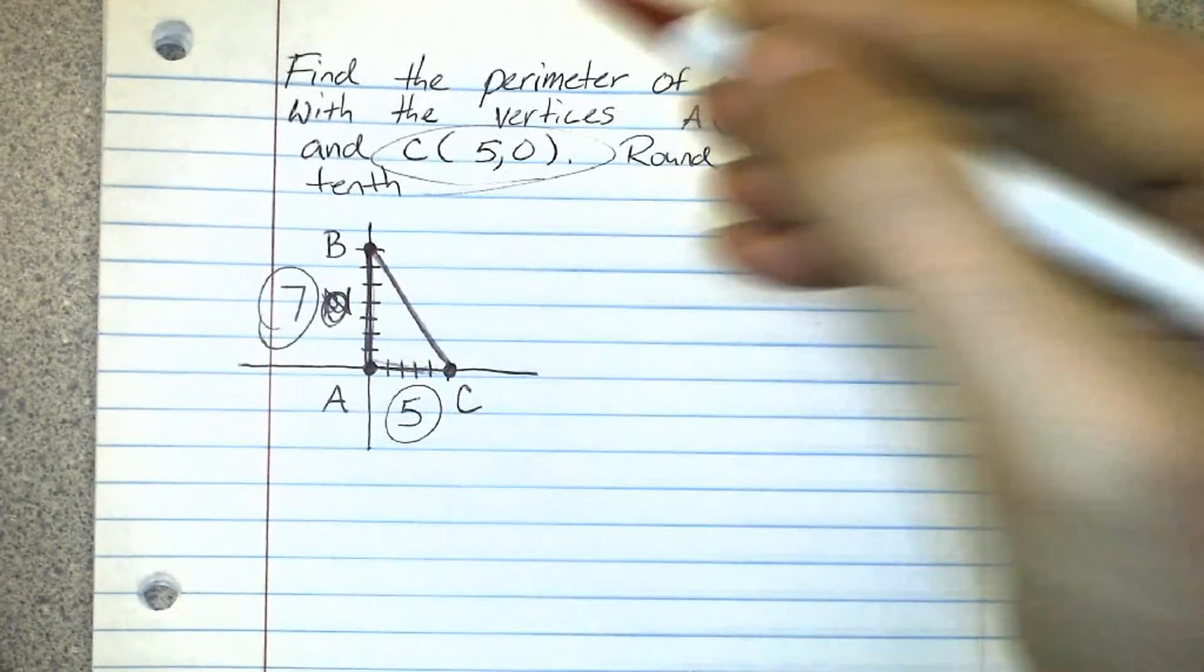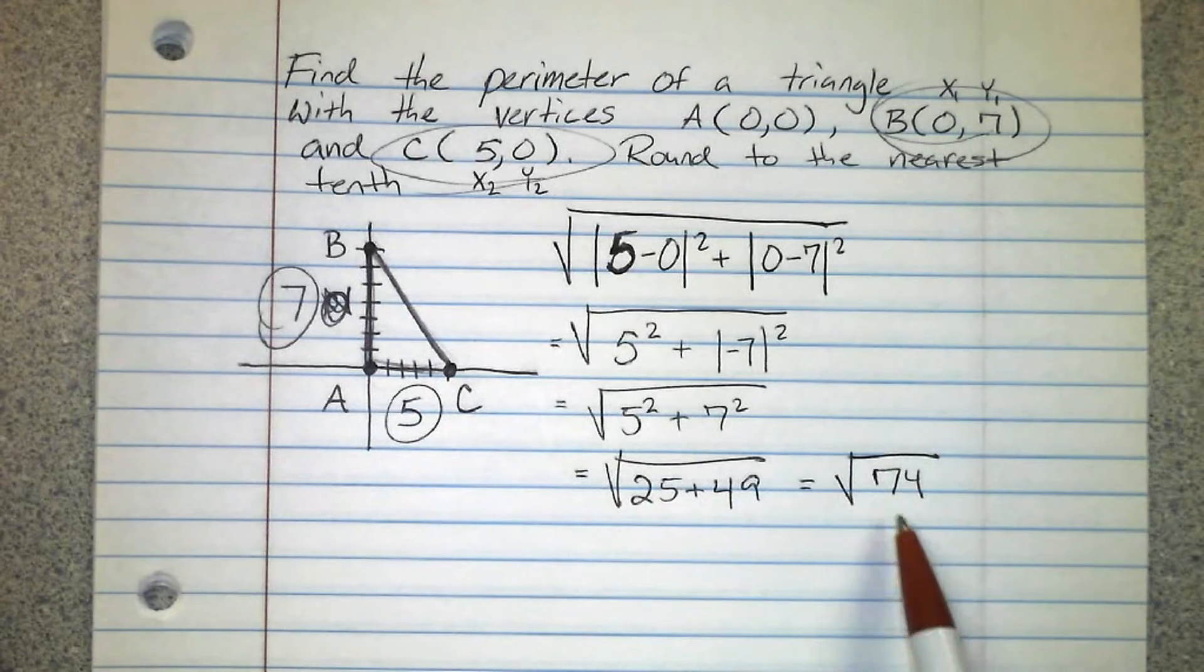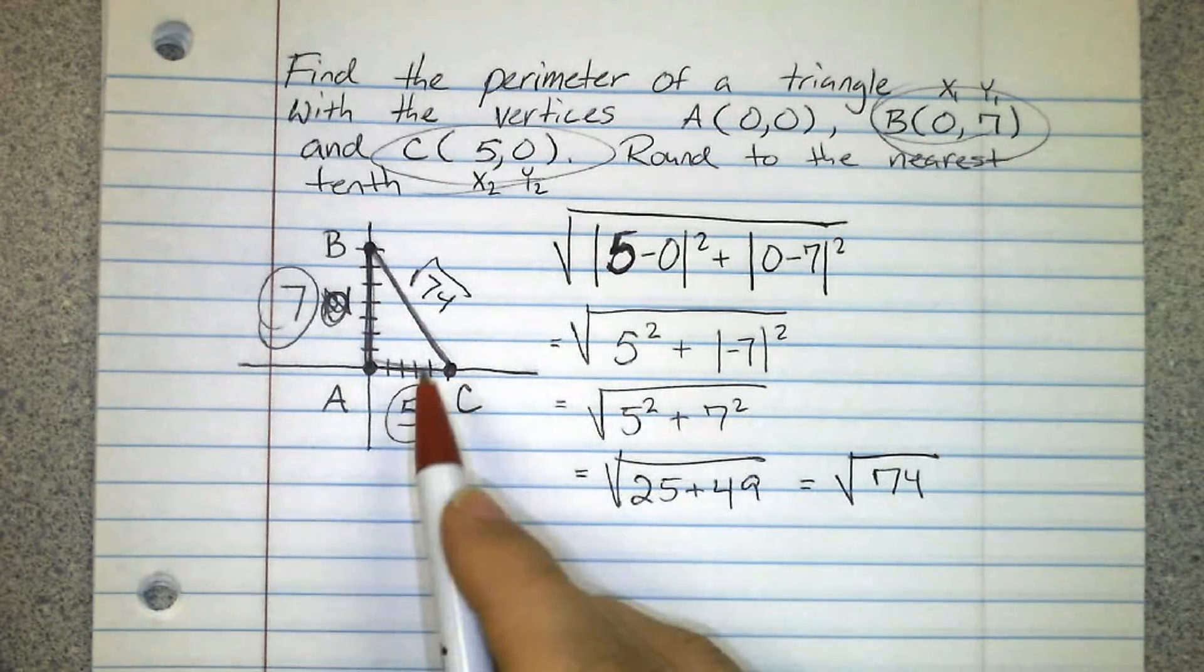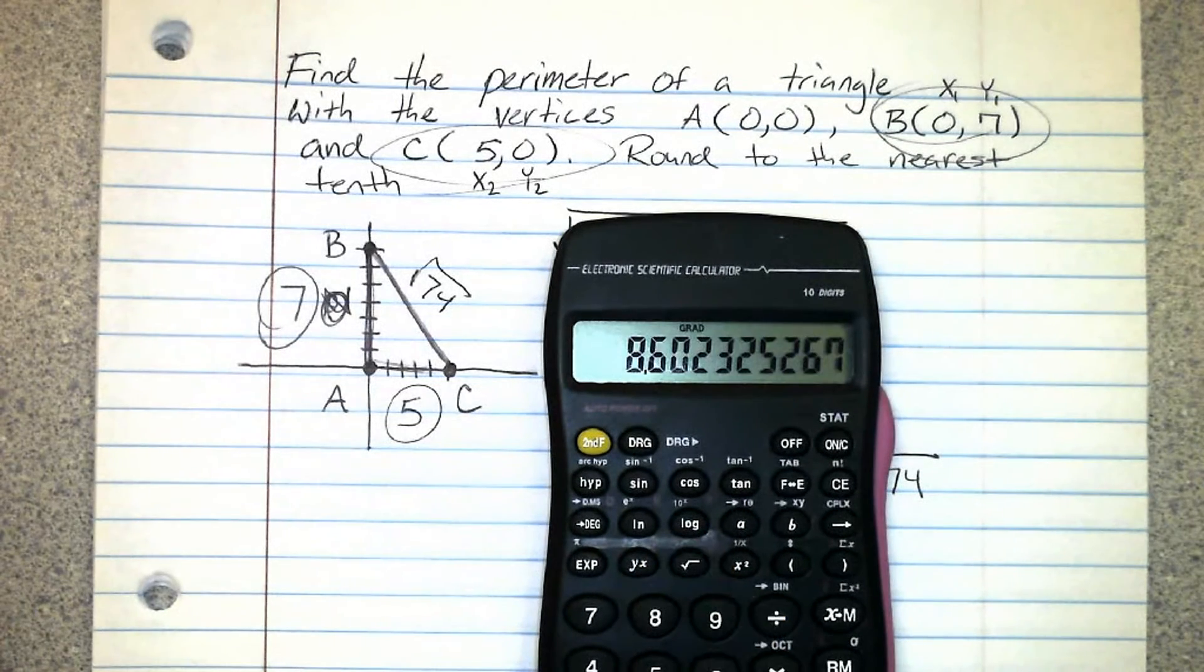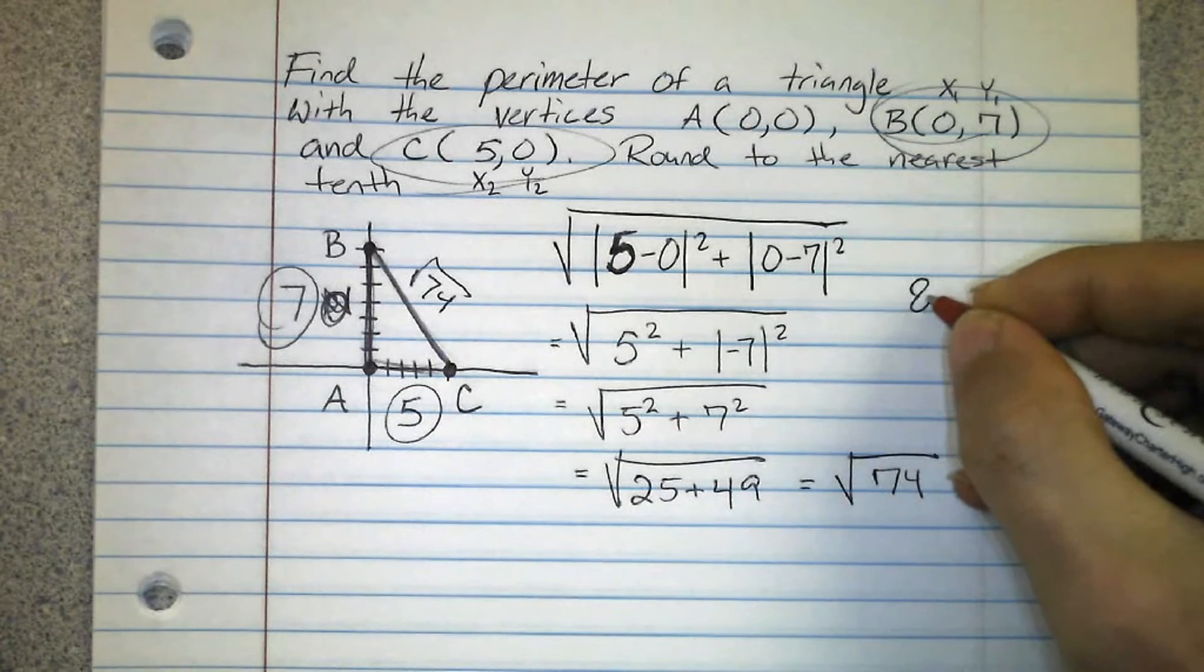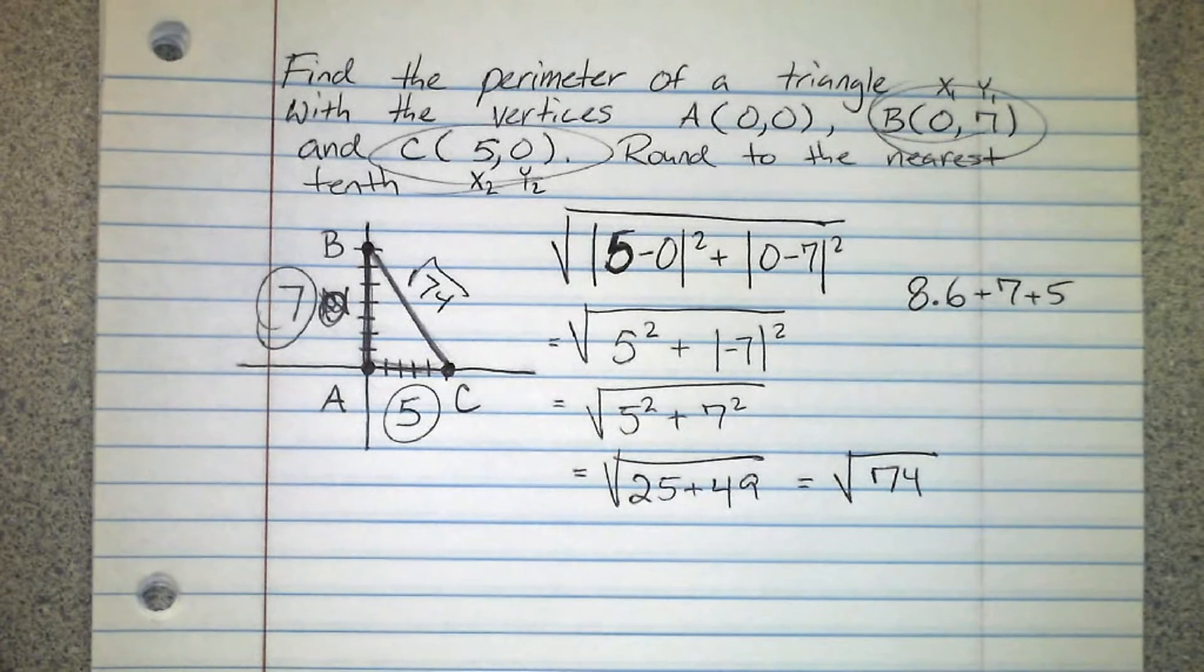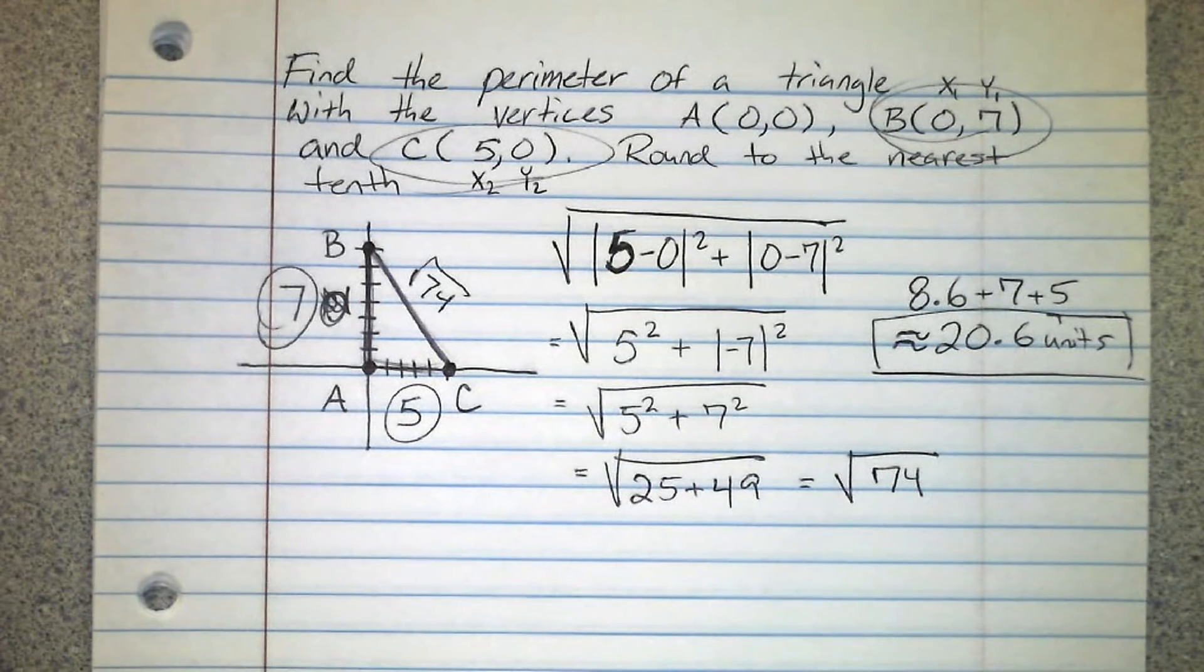Distance formula shows us that this is square root 74, and we're not done yet. We need to find the perimeter, so I know it's going to be root 74 plus 7 plus 5. Well square root of 74 is going to be this. Now I said round to the nearest tenth, so let's take a look at this. We've got 8.6, since the next number is 0 I'm just going to leave it at that. So 8.6 plus 7 plus 5, and when we put those all together, we end up with about 20.6 units. Remember if there's no measurement here, just write units if it's in the coordinate plane.